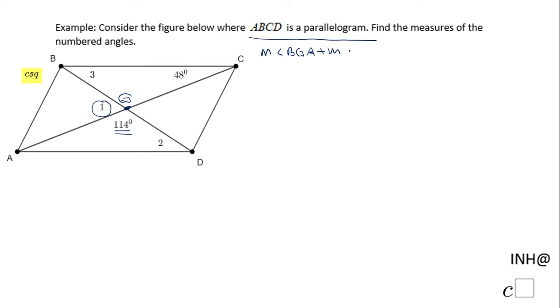The measure of angle BGA, which is angle 1, plus the measure of angle AGD is 180. They form a line, a linear pair. BGA is angle 1 and AGD is 114, so to find the measure of angle 1, subtract 114 from both sides. The measure of angle 1 is 66 degrees.